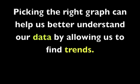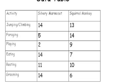Choosing the right graph can help us better understand our data by allowing us to find trends, so it's very important that we know which one is best. Here's a data table comparing the silvery marmoset monkey and the squirrel monkey in different behaviors. While it's clear we can see the different behaviors being measured, we still can't really see if there's any pattern or trend because it's just a bunch of numbers in a table. Hopefully after reviewing the three different types of graphs, we'll be able to find the best graph for this data table.